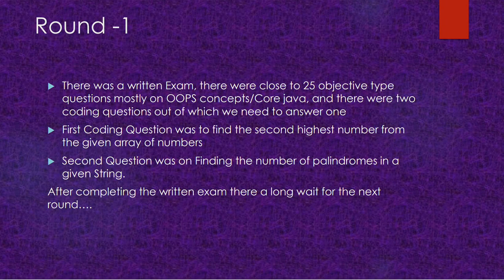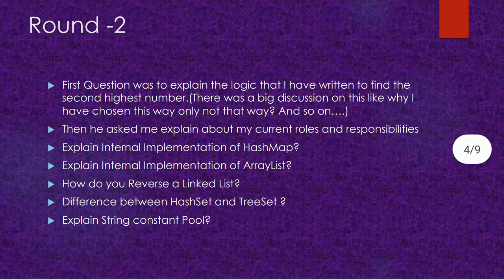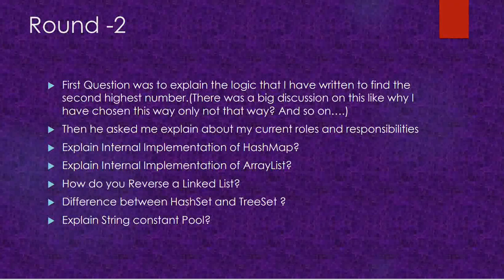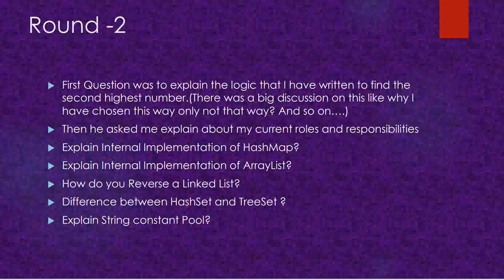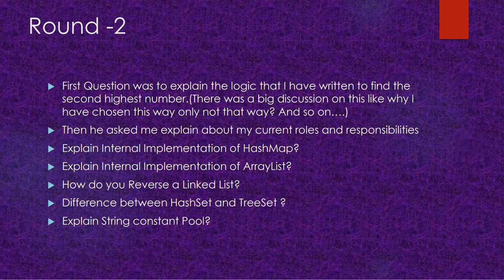He qualified Round One and moved to Round Two. The first question was to explain the logic he had written to find the second highest number, and there was a big discussion on why he chose that approach and not another. This is obvious — the interviewer expects you to explain why you coded it a particular way, since there are multiple ways to find the second highest number.